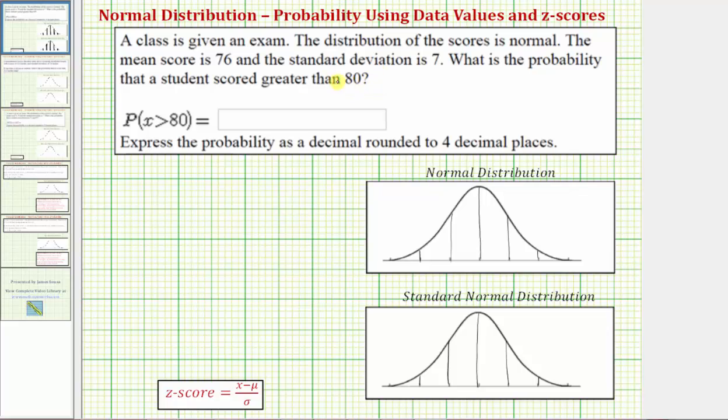We can express this as the probability that x, the test score, is greater than 80. So we know the mean, or mu, is equal to 76, and the standard deviation, or sigma, is equal to seven.